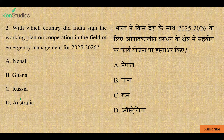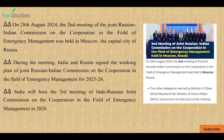The correct option is C — Russia. The correct answer to this question is India and Russia. On 28th August 2024, the second meeting of the Joint Russian-Indian Commission on the Cooperation in the Field of Emergency Management was held in Moscow, the capital city of Russia.